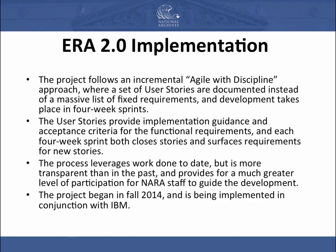One thing I want to mention about how we are doing this project differently is that this is an Agile project. We are using a flavor of Agile called Agile with Discipline — not Scrum or Kanban. We started with a set of use cases and developed user stories for all of our functionality. We are doing four-week sprints, starting in fall of 2014, so we're about two-thirds of the way through development. Each user story provides the implementation, acceptance criteria, and definition of done so we can write test cases. Since the end of the first sprint, we've had a working system that has grown iteratively. The work is being implemented by IBM as our partner, who also has responsibility for the current ERA system. We have about 40 contractors on the project.